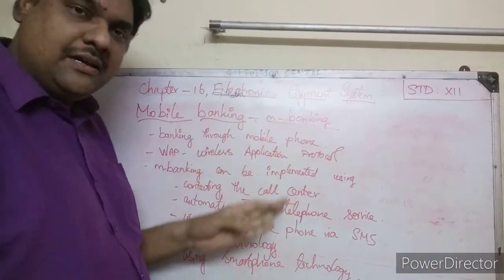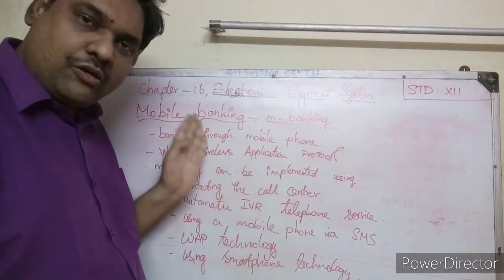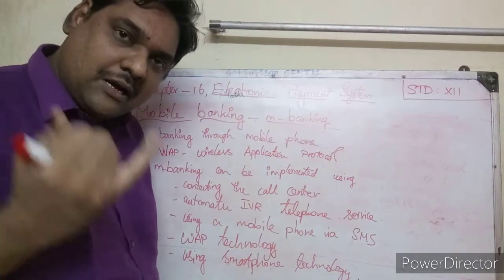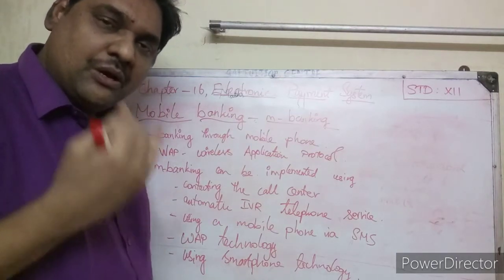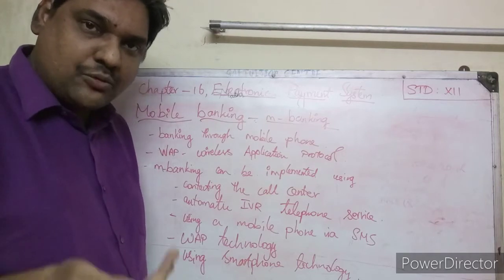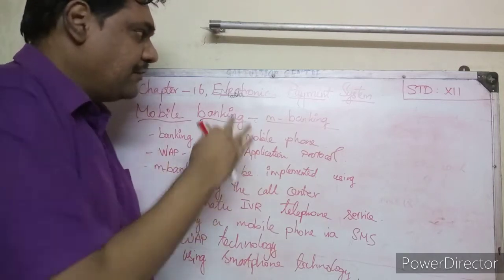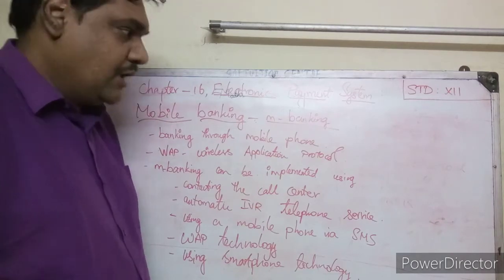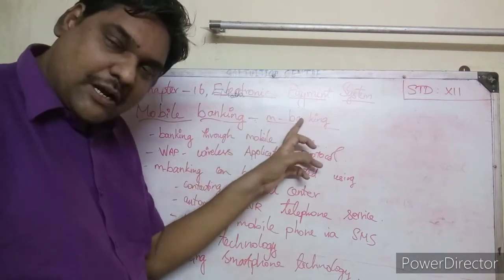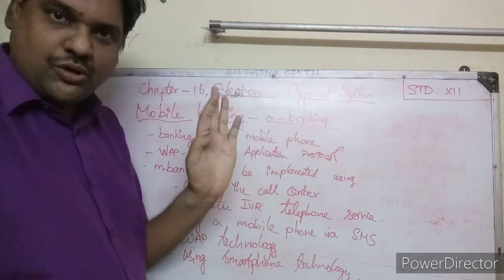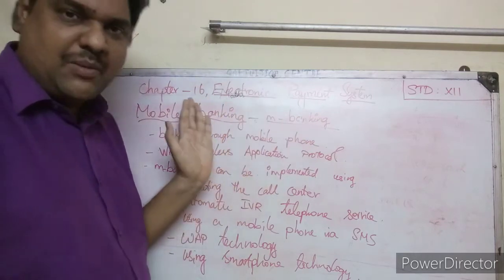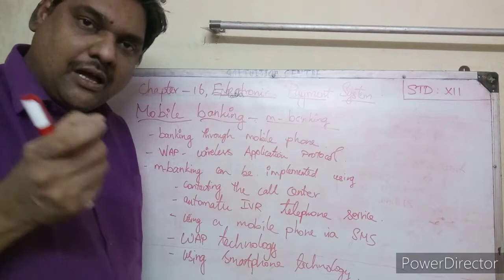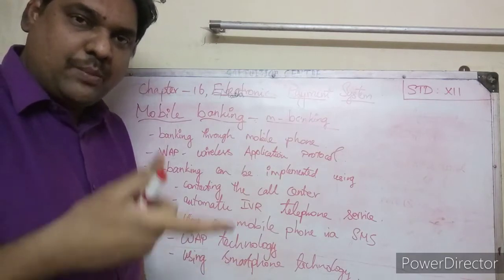Today we are going to see the next way of electronic payment system. The third way of electronic payment system is mobile banking. In short, we can call it M-banking. As the name suggests, it means banking through your mobile phones.